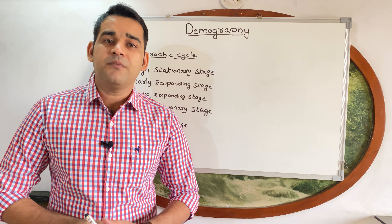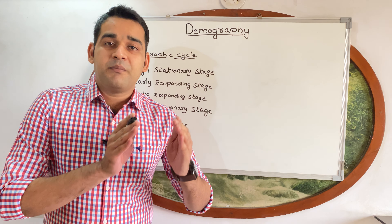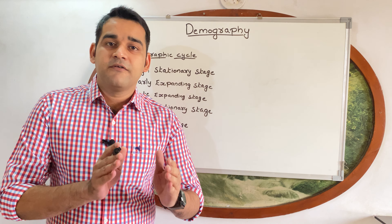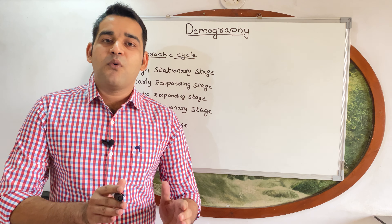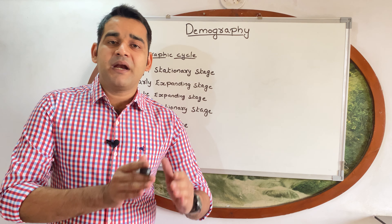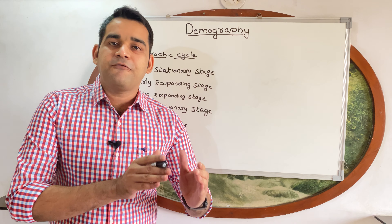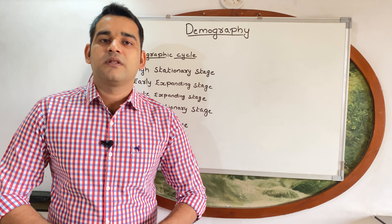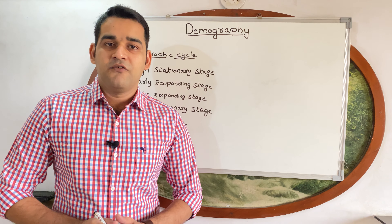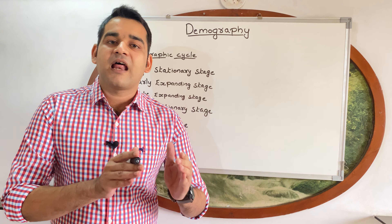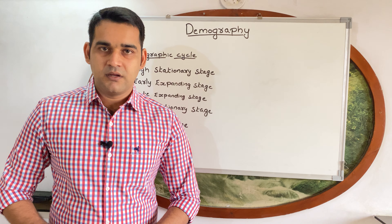The word demography comes from two Greek words: 'demos' and 'graphian'. Demos means 'the people' and graphian means 'the record'.